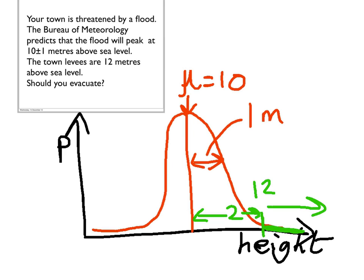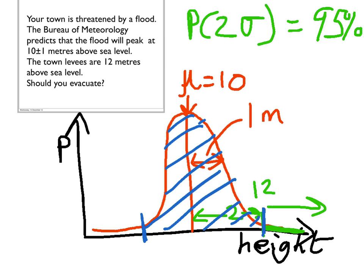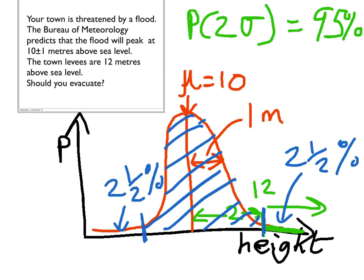You can look up a table of Gaussian integrals, or you can remember that the probability of something being within two standard deviations of the mean — P2 sigma — is 95%. So if we go from plus 2 to minus 2, the total area inside that is 95%, hence it's 5% outside. Of that 5%, half will be down there at 2.5%, and 2.5% up here. So that's saying that the odds of a flood are about 2.5%.